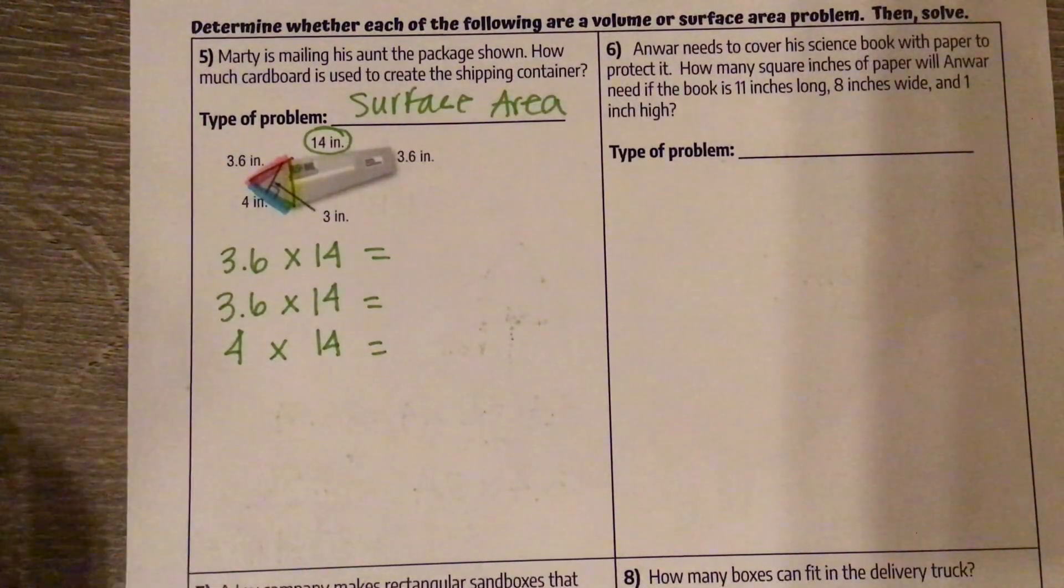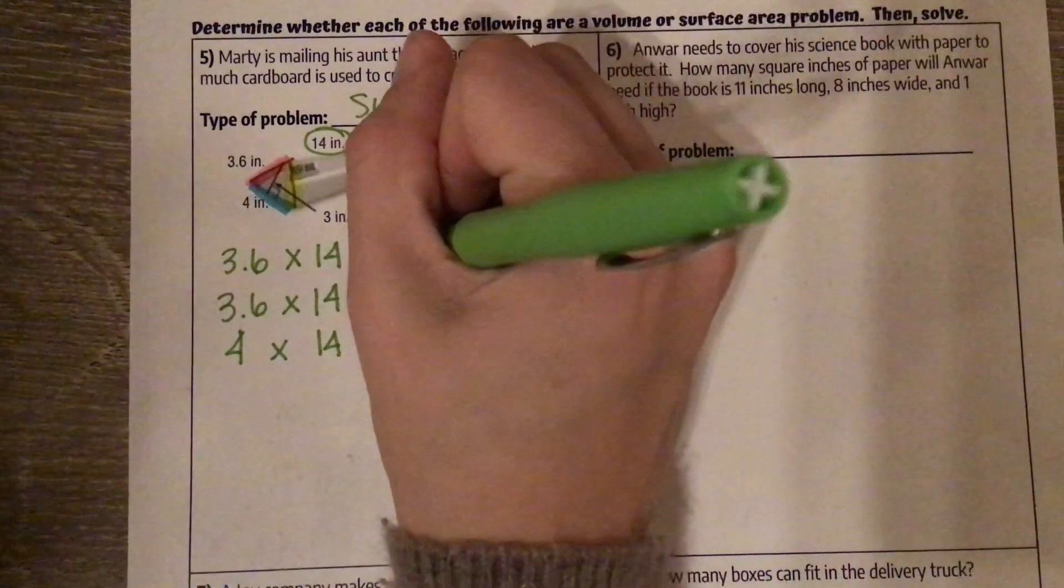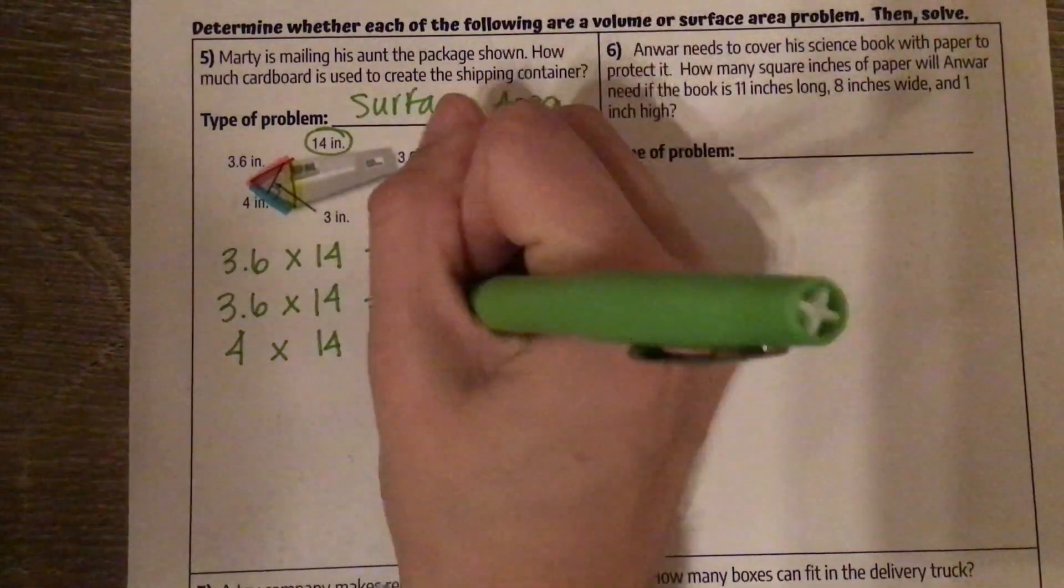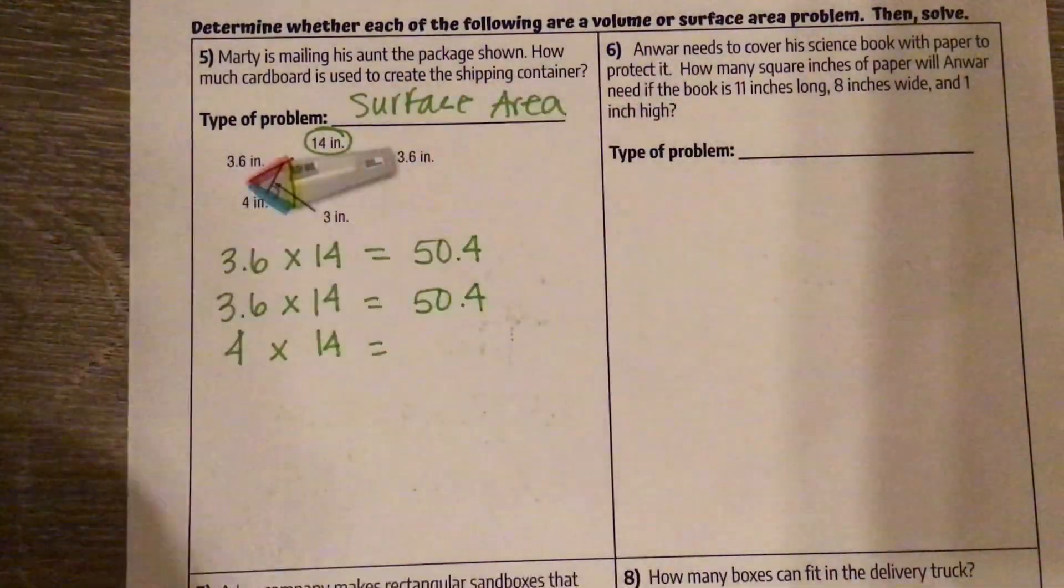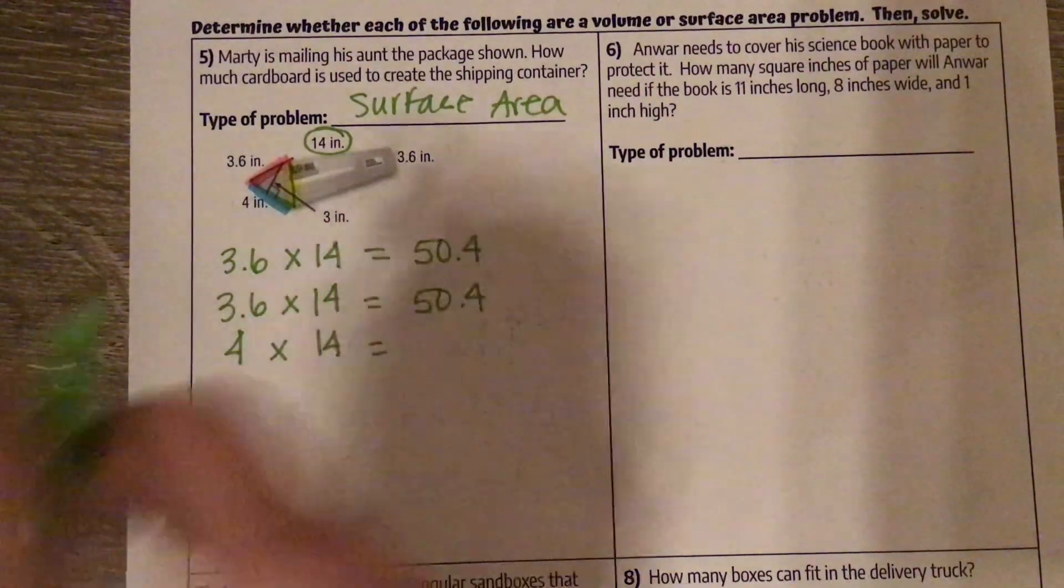So 3.6 times 14 is 50.4. And 4 times 14 is 56.